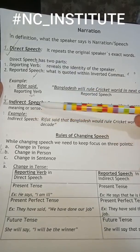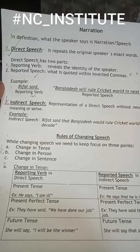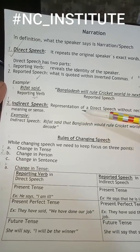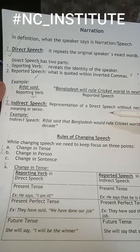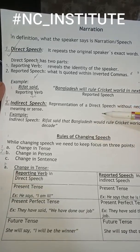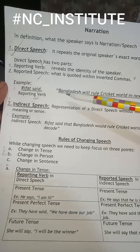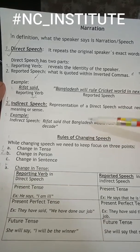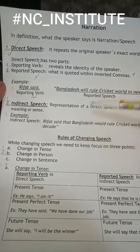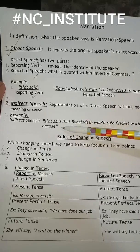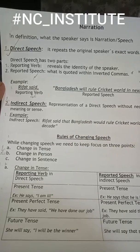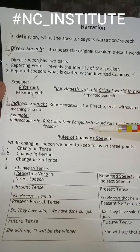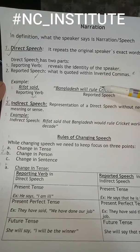In indirect speech, it is the repetition or representation of the words of the speaker, but the words will not be quoted in inverted commas as in direct speech, and there is no change of meaning between direct speech and indirect speech. As an example: 'The referee said that Bangladesh would rule the cricket world in the following decade.' These two sentences are the examples of direct speech and indirect speech.